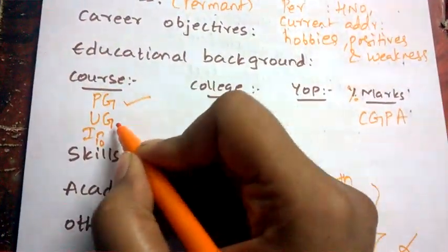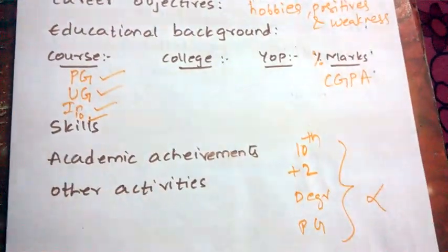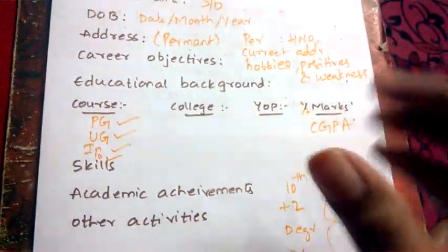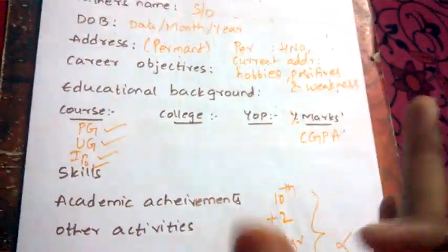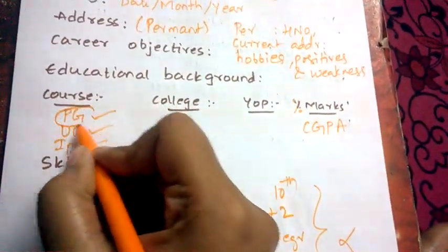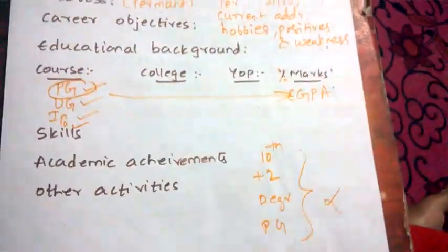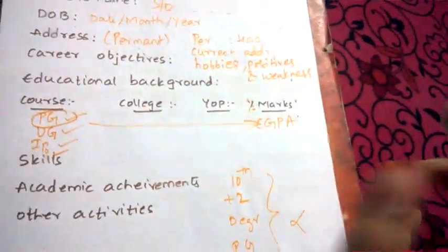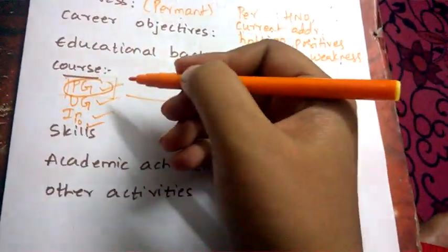The reason for this order is that HR will not have much time to look at your resume in detail. They will quickly check your highest degree and your CGPA or percentage to decide whether you are applicable for the job. So always mention your highest qualification on the first line.